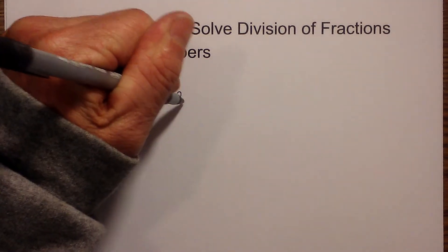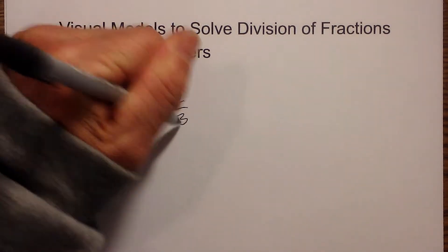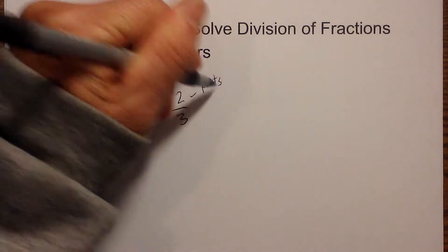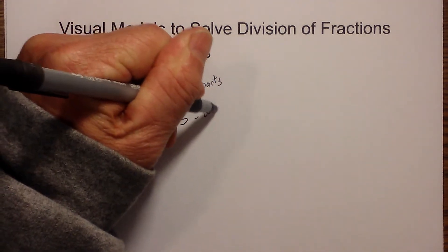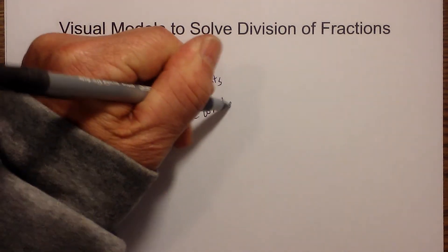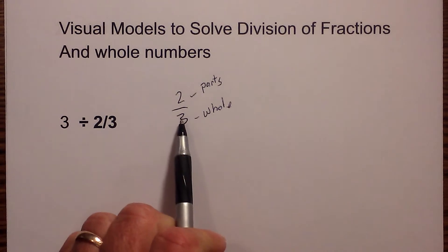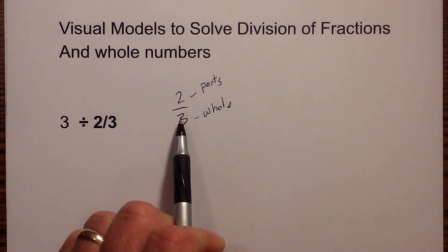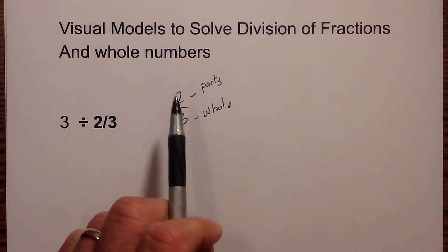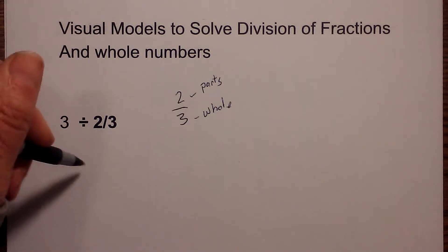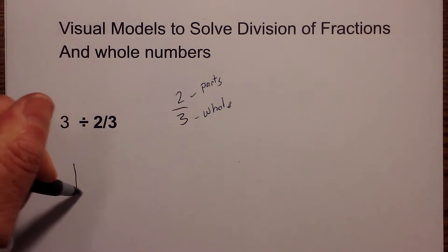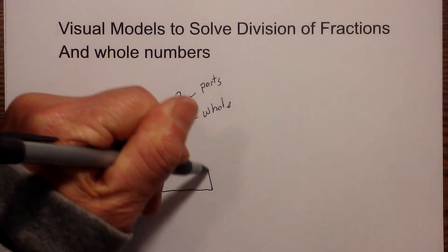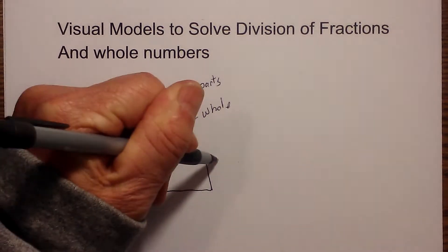As you know, with a fraction, the 2 over 3 tells you how many parts you have of a whole. This 3 tells you that the whole will be divided into 3 parts, and then you have 2 of these. So I am going to go ahead and we will call these blocks. I will draw 3 blocks.